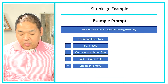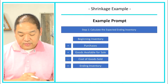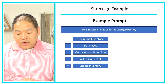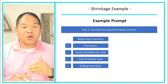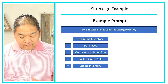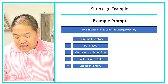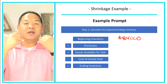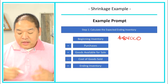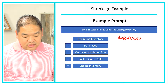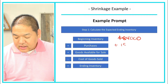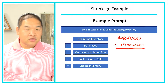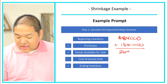Step one: calculate the expected ending inventory using our ending inventory equation. Beginning inventory from the prompt is $84,000, which becomes this year's beginning inventory. We then add purchases of $185,000. Adding those two numbers together gives us $269,000 as our goods available for sale.